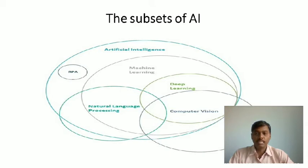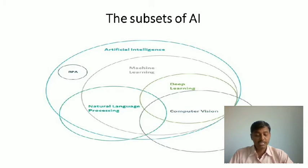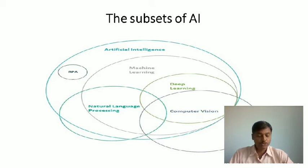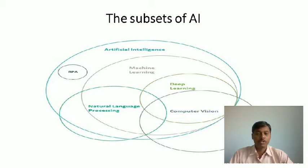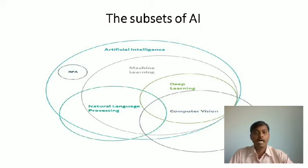Natural language processing (NLP) is the use of computational linguistics and artificial intelligence to enable computers to understand and interpret human language, including speech and written words. Computer vision is the ability of machines to recognize and draw data or information from images, such as pictures and videos. All together, these are connected with RPA, robotic process automation, and these are the subsets of artificial intelligence.